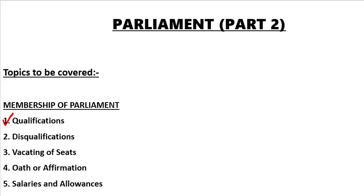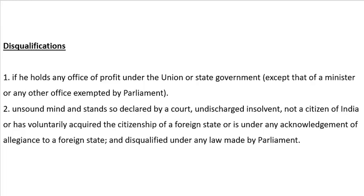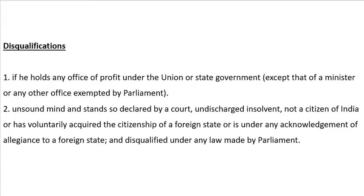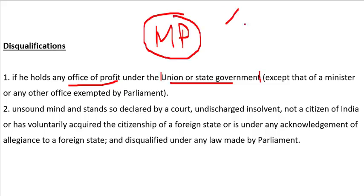Now we will see disqualification — what is it and how can you be disqualified as a Member of Parliament. The Constitution provides some grounds and the Representation of People Act provides additional ones. First, if any Member of Parliament holds an office of profit under the Union or State Government, they will be disqualified. However, if you are a minister, that is okay — ministers are exempt from this disqualification.